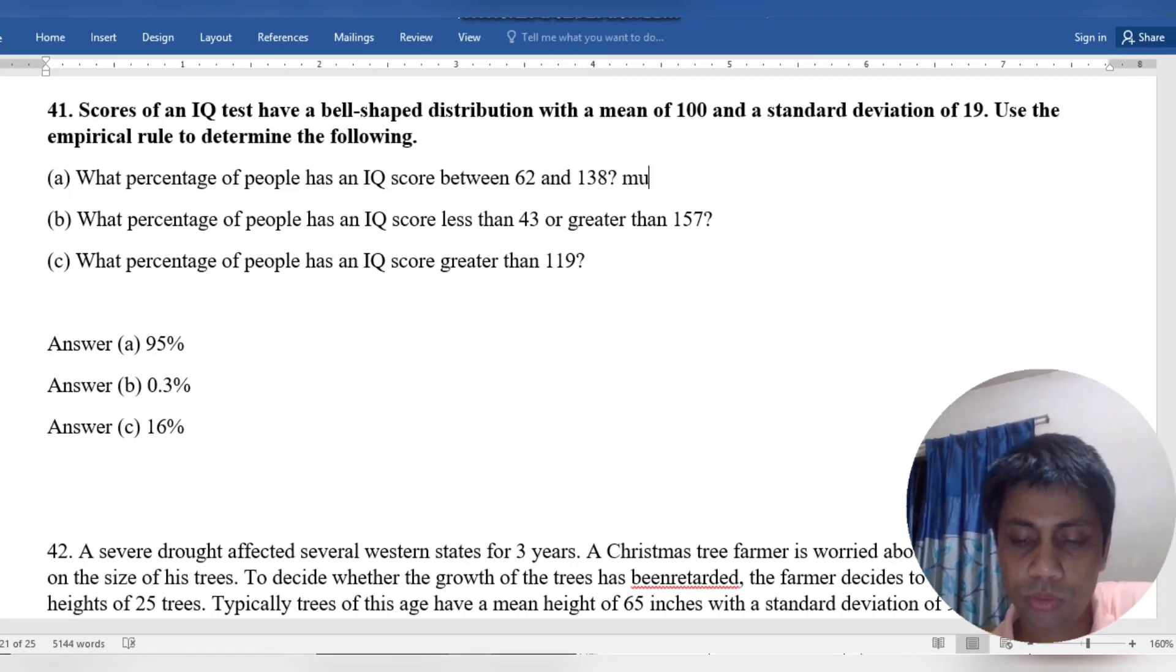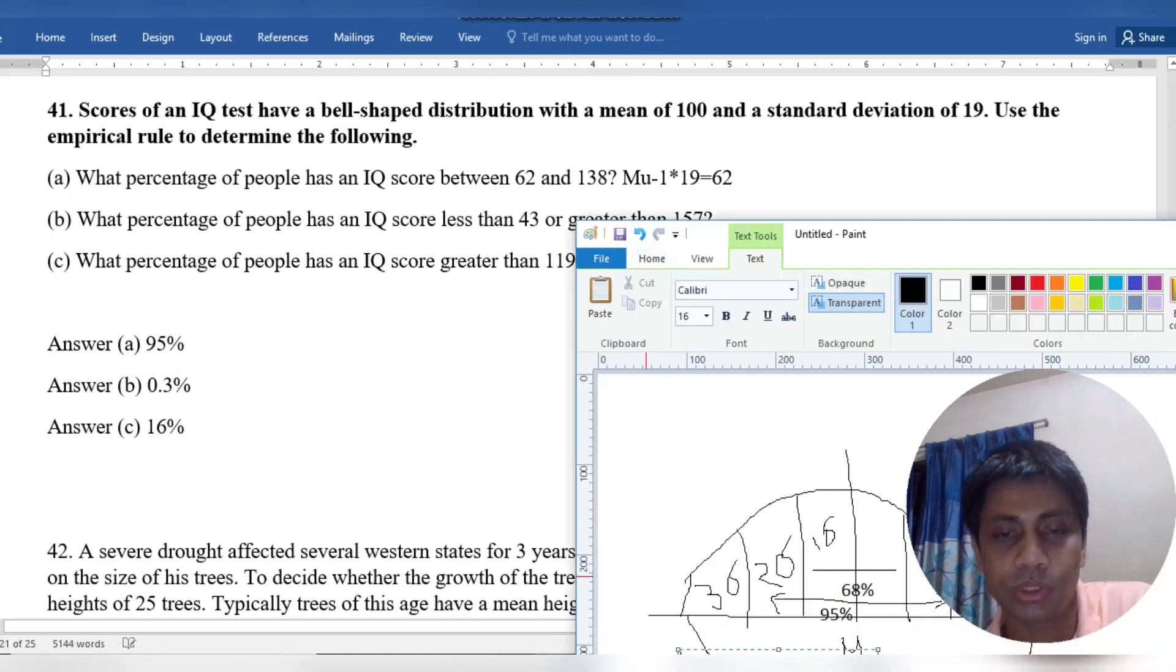That means mu minus one sigma. One sigma, which is 19, equals 62. So we get this result.